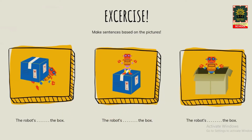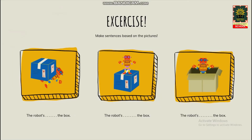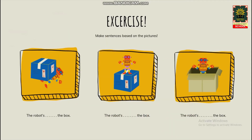Gambar selanjutnya. The robot [is] ... the box. Ayo, diingat-ingat lagi. Oke, go! Jawabannya adalah the robot is on the box. Karena robotnya ada di atas kardus.